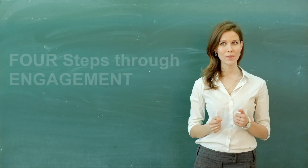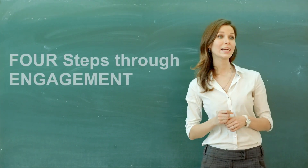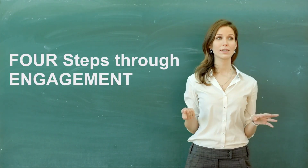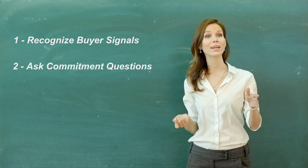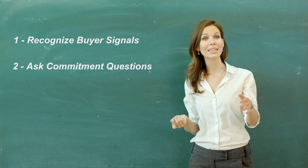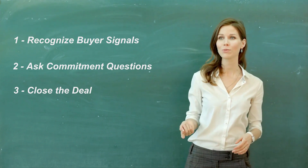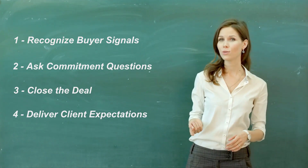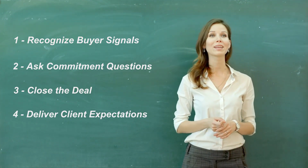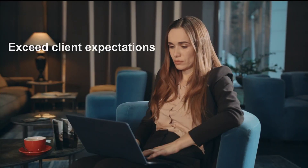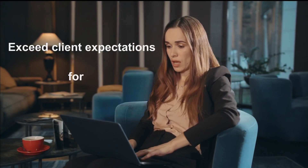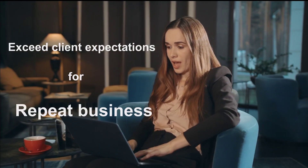In logical sales, there are four steps to ensuring smooth flow through the engagement stage. These are: recognize signals, ask commitment questions, close the deal, and deliver client expectations. This module takes you through each of the above steps in detail, highlighting how you can maximize the purchasing experience for both the client and your company, leading to repeat business. Let's get started!